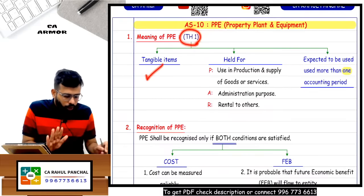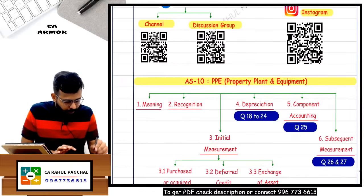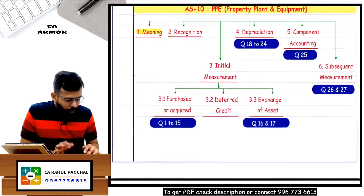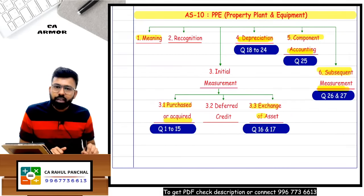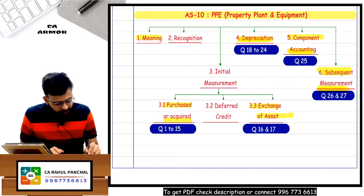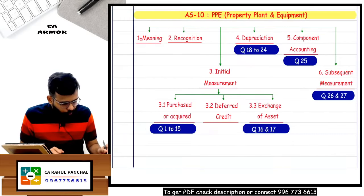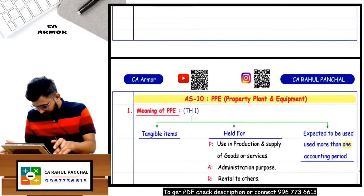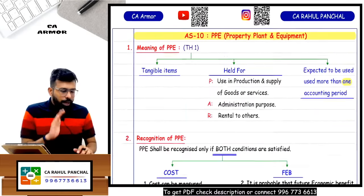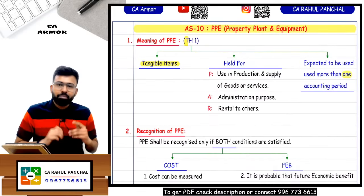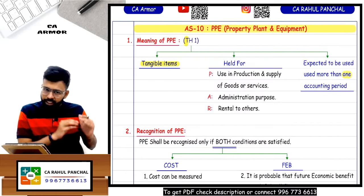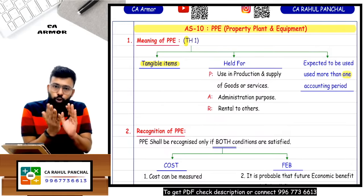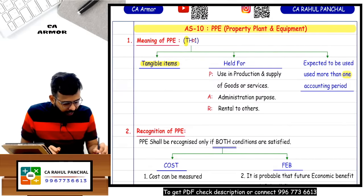First, let us cover the meaning. What is very important is depreciation, component accounting, and subsequent measurement - these parts are very important. PPE is nothing but a tangible item. It should be tangible because if it is intangible, there is another standard which is there in Group 2.